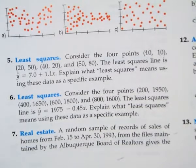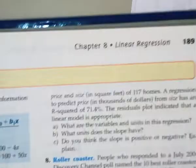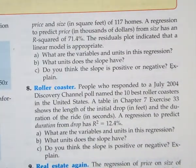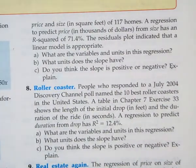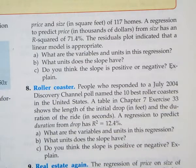It says we got a random sample of 117 homes in Albuquerque, and they give us that price, gives the price and size in square feet. And the regression has an R squared of 71.4%, and the residual plot indicated a linear model would be appropriate.